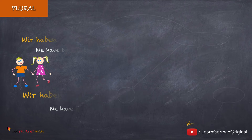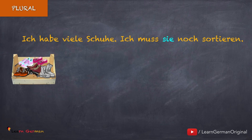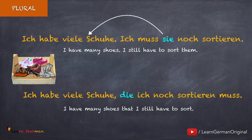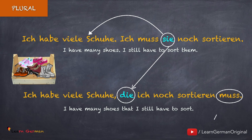Hier ist ein Beispiel für Akkusativ-Personalpronomen im Plural: Ich habe viele Schuhe — ich muss sie noch sortieren. Im Relativsatz wird sie durch das Relativpronomen die ersetzt: Ich habe viele Schuhe, die ich noch sortieren muss. Das Verb steht am Ende.